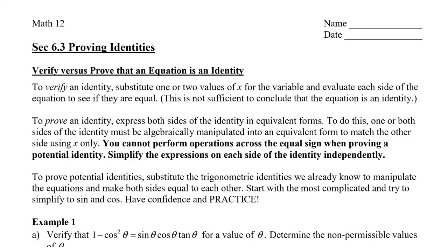In this video, I'm going to show you how to prove trigonometric identities. Remember that to verify an identity, you're going to substitute a value for x on both sides of the equation to make sure the left side is equal to the right side. However, this is not sufficient to conclude that the equation is an identity. To show that it is an identity, we need to show that both sides are equal for any value of x.